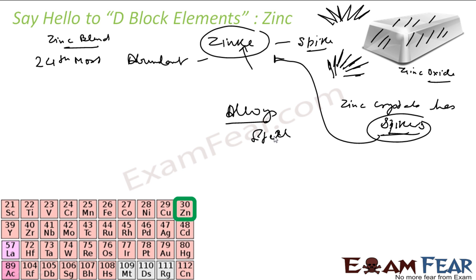In solder that is used for soldering electrical equipments, circuits, Zinc is used. It is also used in dry cell battery. Zinc is used. It is also used in shampoo. The anti-dandruff shampoo has Zinc.